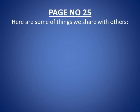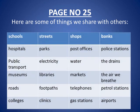Let's look at page 25 in your book and read the table of things we share with others. Schools — a place where you go for learning. Streets — you share streets with neighbors to go from one place to another. Shops — a place where you go and buy things. Banks — a place where you keep your money for safety. Hospitals — a place you go for treatment when you are sick. Parks — where you go to play and have entertainment.